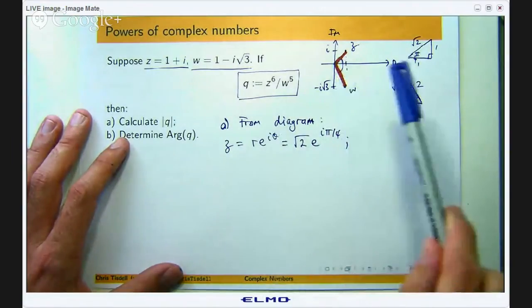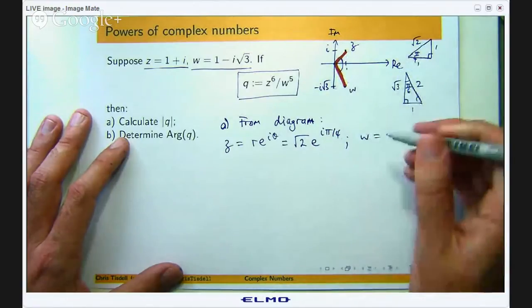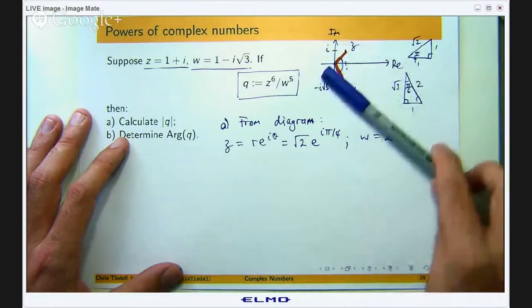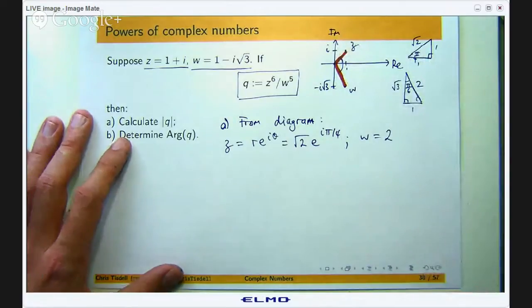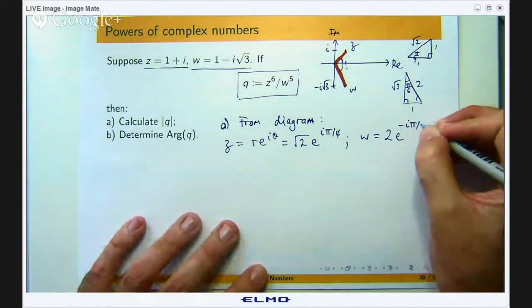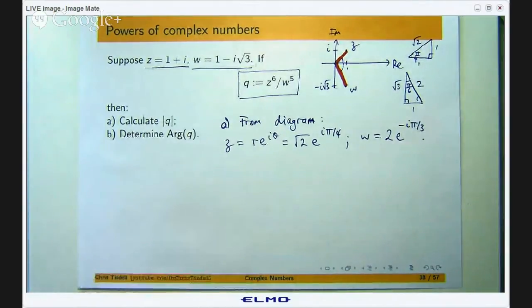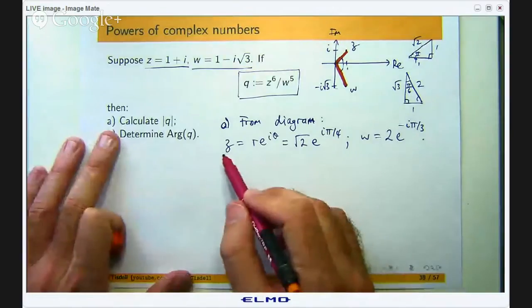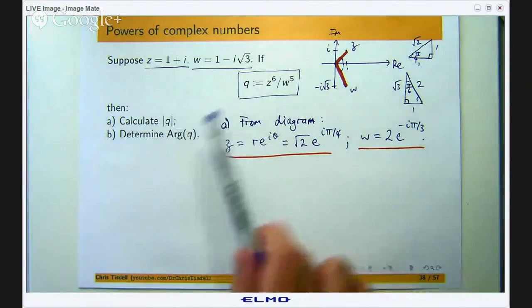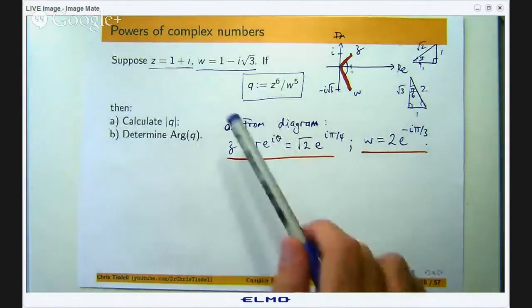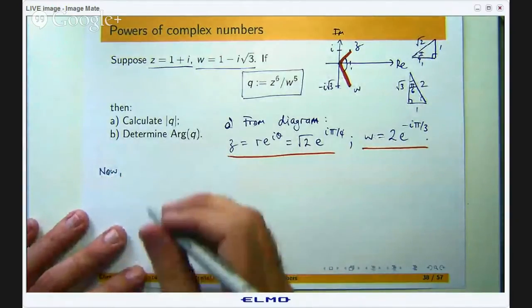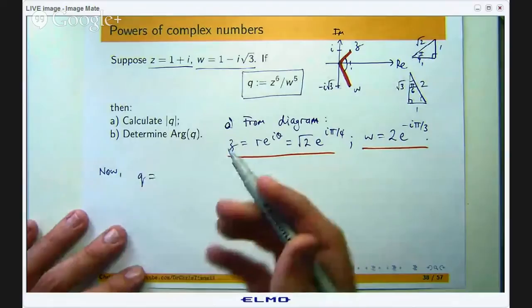Similarly what about w? Well w is 2 units from the origin and the angle rotating from the positive real axis clockwise we have to go rotate π on 3 or 60 degrees in the clockwise direction so that is going to mean a negative sign here. We can now use these forms, these polar trig forms, to calculate q and then we can look at its modulus and its principal argument.